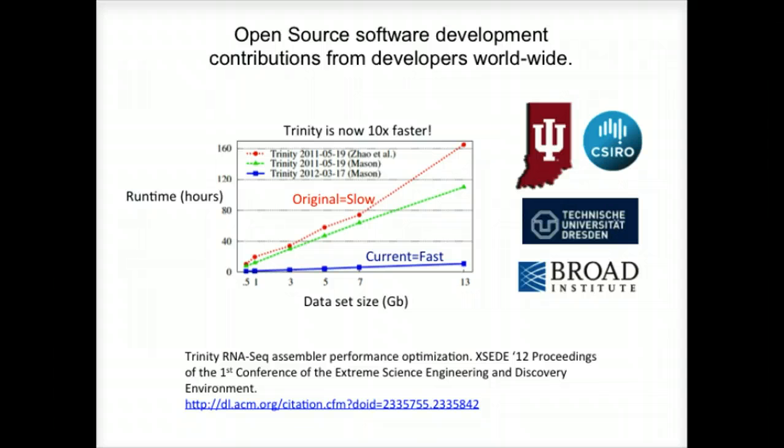Shown here is a plot that shows the runtime of different versions of Trinity as a function of the size of the dataset to be assembled. The original version, as run on a couple of different systems, was fairly slow. The current version, thanks to work over the last year with our collaborators, is now 10 times faster than the original.